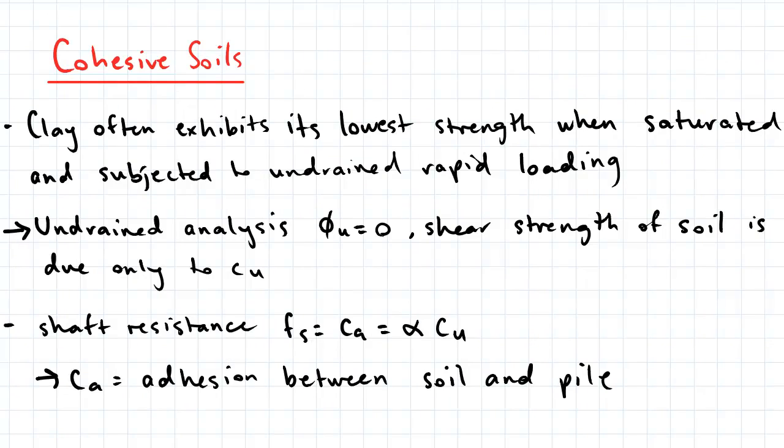Let's now talk about the ultimate axial capacity in cohesive soils. Clay often exhibits its lowest strength when saturated and subjected to undrained rapid loading. Hence we use an undrained analysis where phi U is equal to zero and the shear strength of a soil is due only to the undrained cohesion CU.